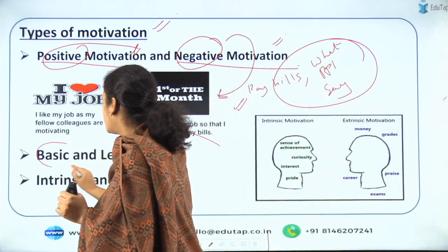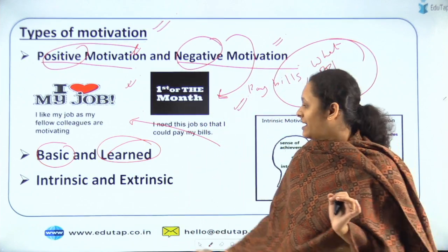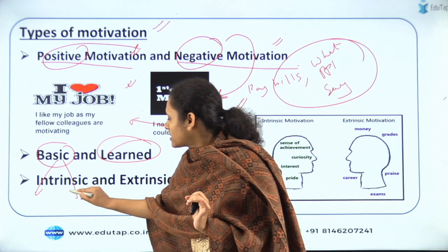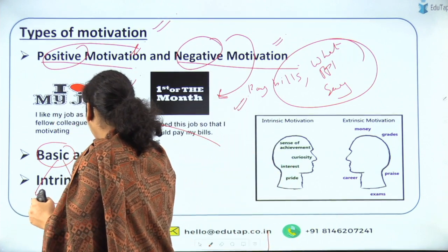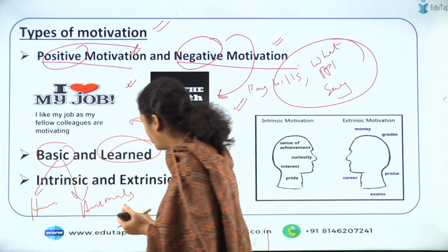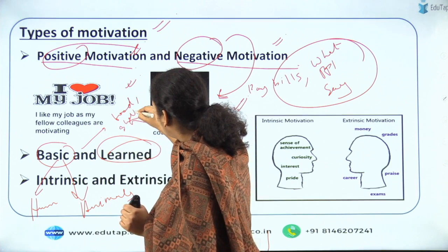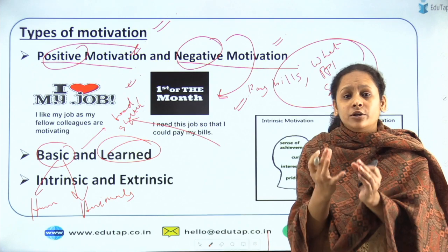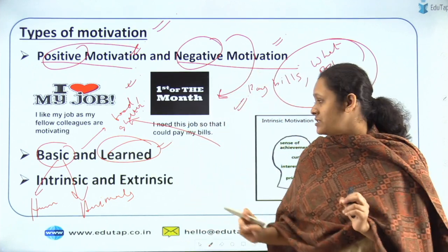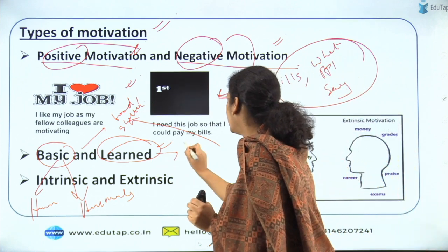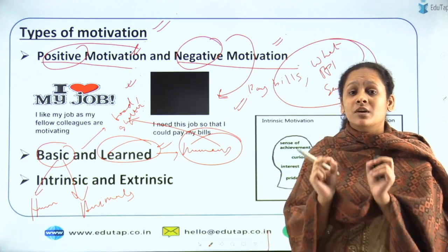The next classification is basic and learned motivation. Basic motivation means those kinds of motivation which are common to both humans and animals — for example, food and shelter. These are basic needs common to humans and animals. Learned motivations are those which are possible in humans — people learn from their experiences. That is what learned motivation is.